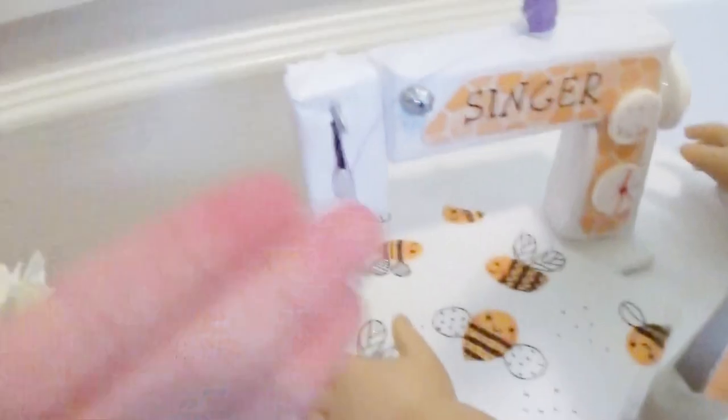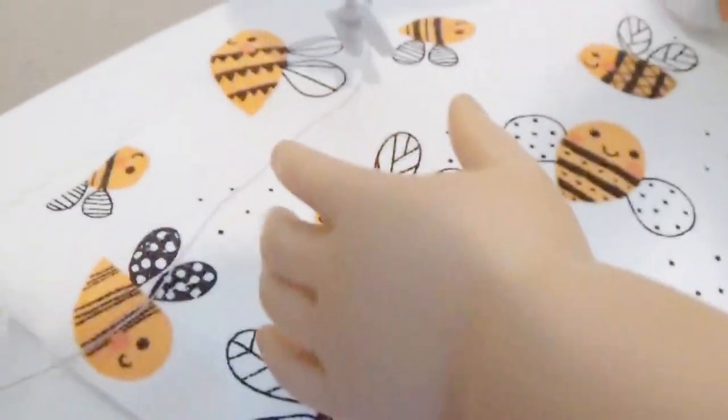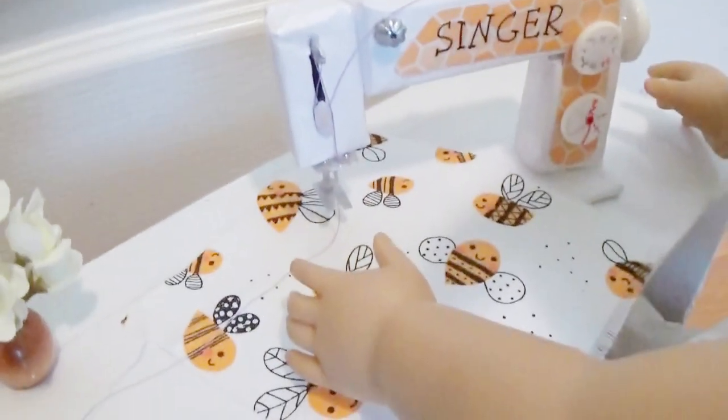All right guys, that is basically it. This is the finished product. It's so cute. We finally got all of it done. There's the little mechanism there. It's so cute and you can slide some fabric underneath it to make it look like it's actually sewing. It's really cute. And if you enjoyed this video, make sure you like, subscribe, comment down below because I love talking to you guys and I will see you in my next video. Bye!